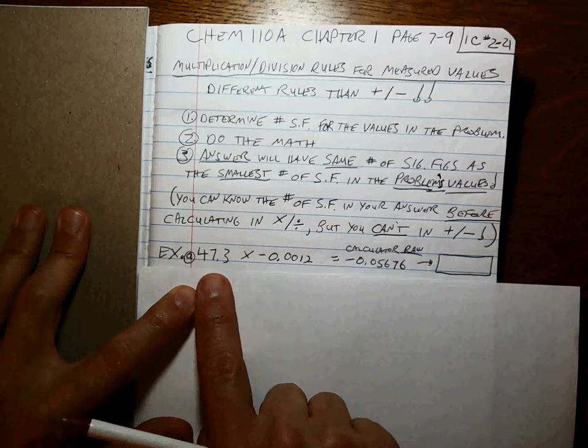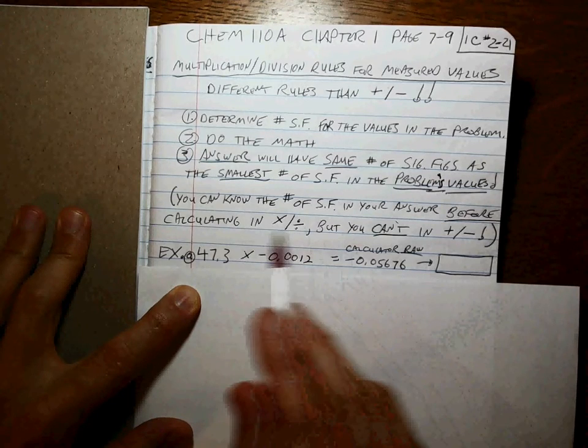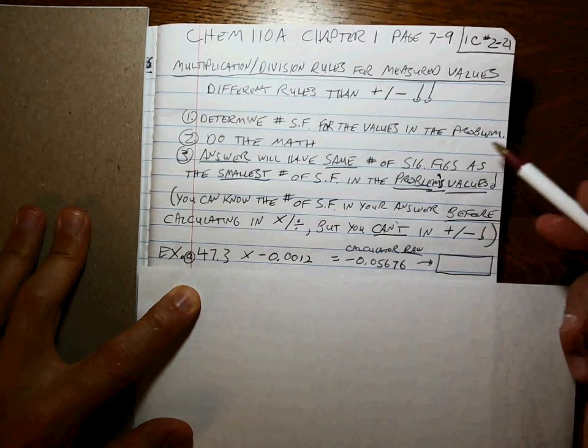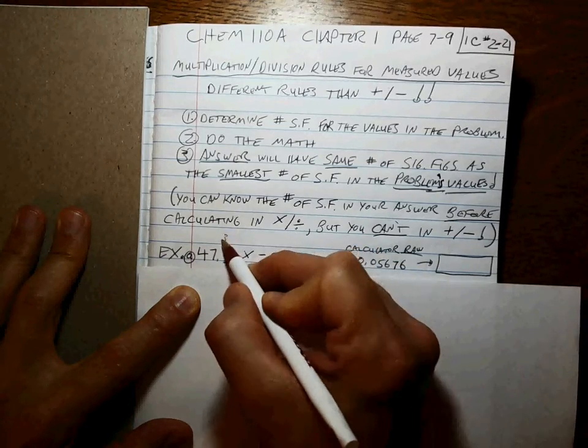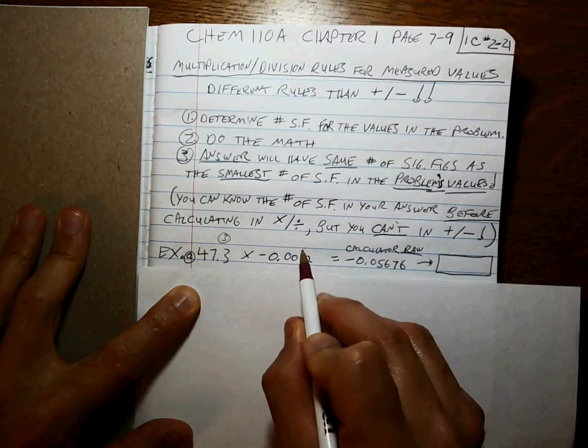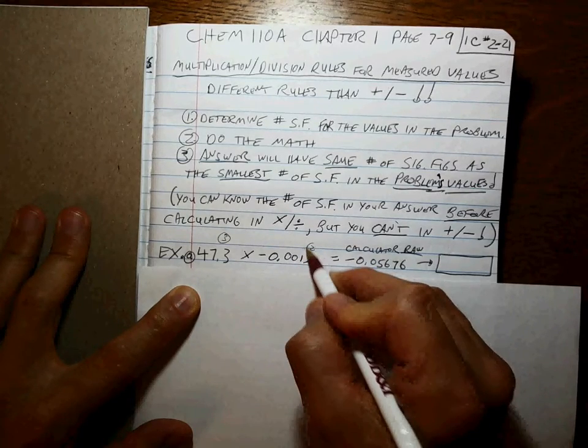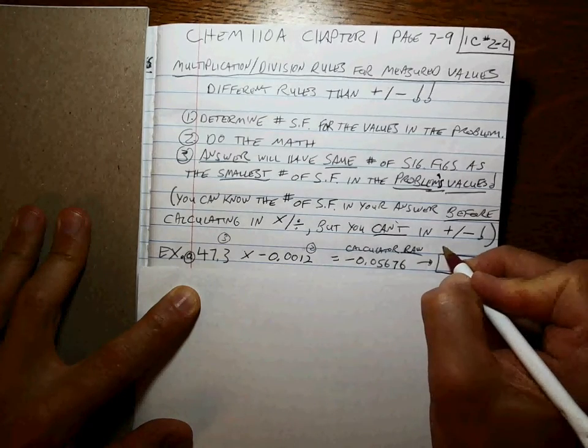47.3 times negative 0.0012. Determine the number of sig figs for the value in each problem: 1, 2, 3 here. Start counting here: 1, 2. So if we have a 3 times a 2, the answer is going to have 2. That's why I like to do it. That determines the number of sig figs in your answer.